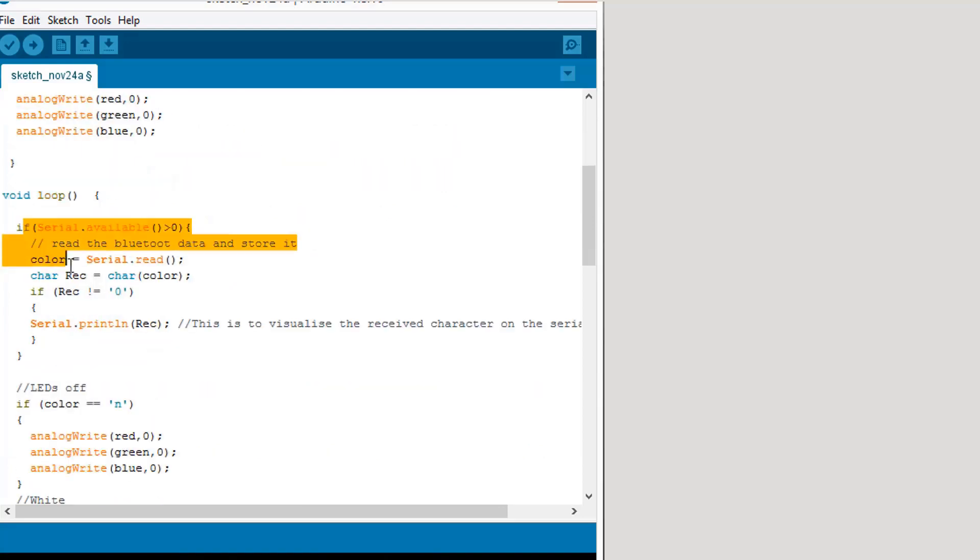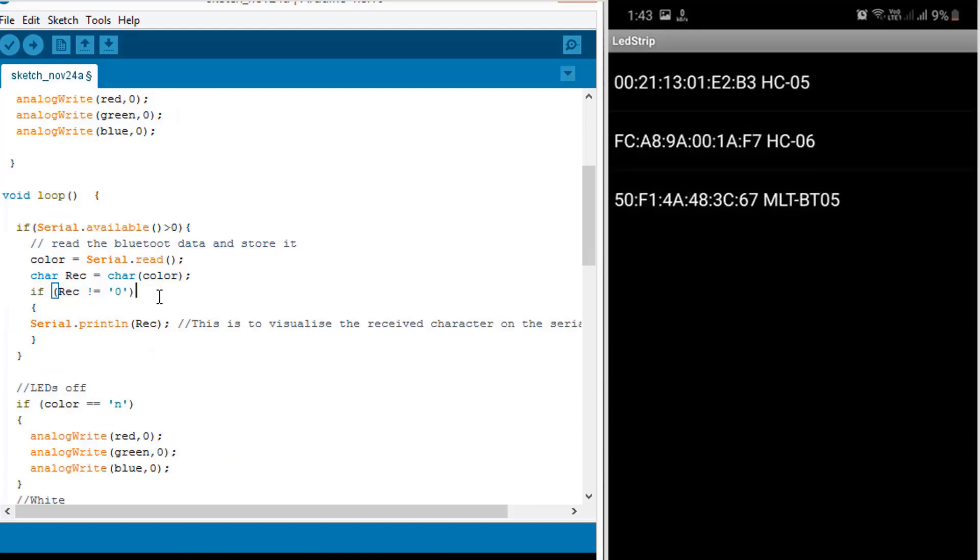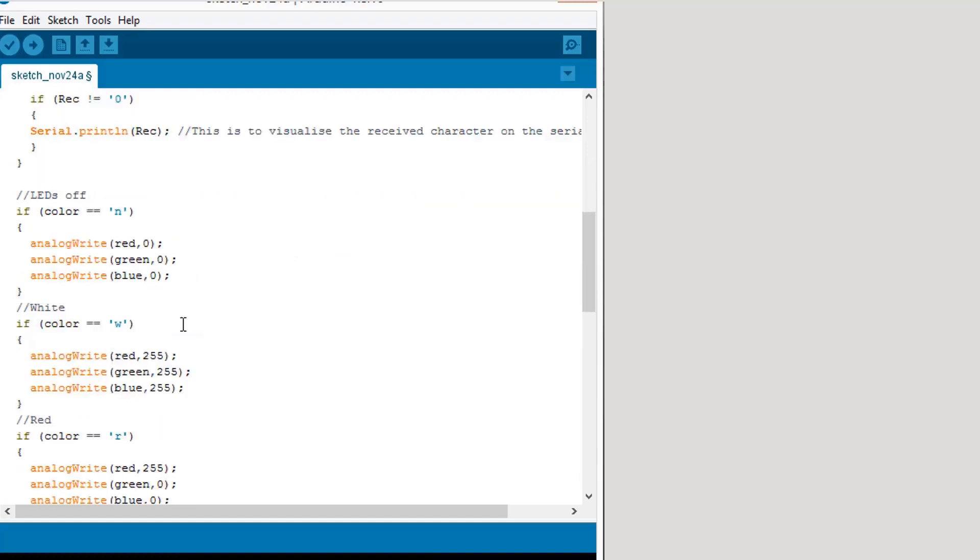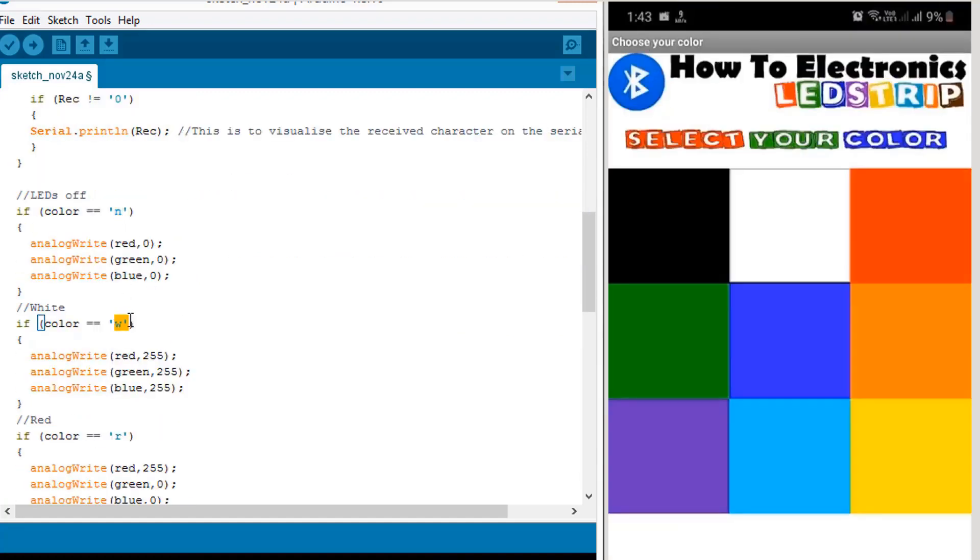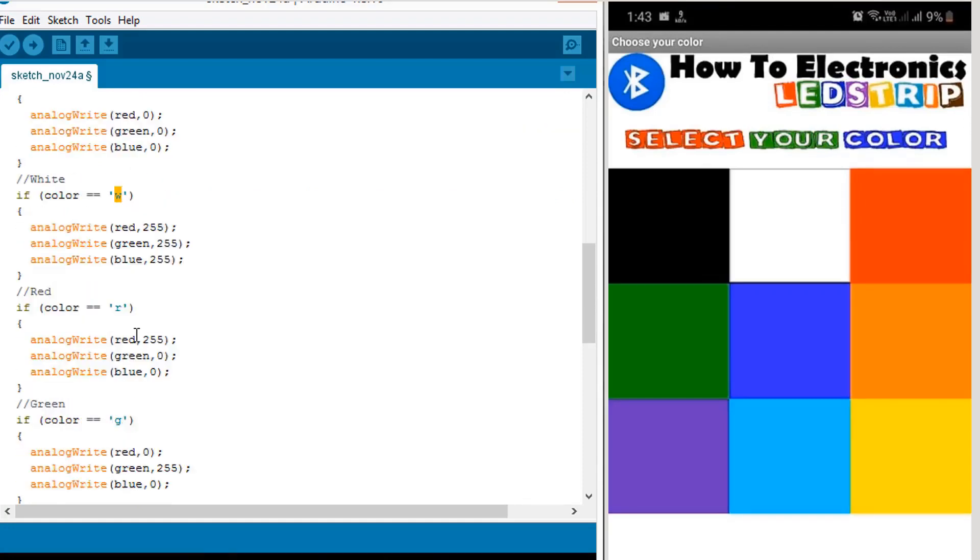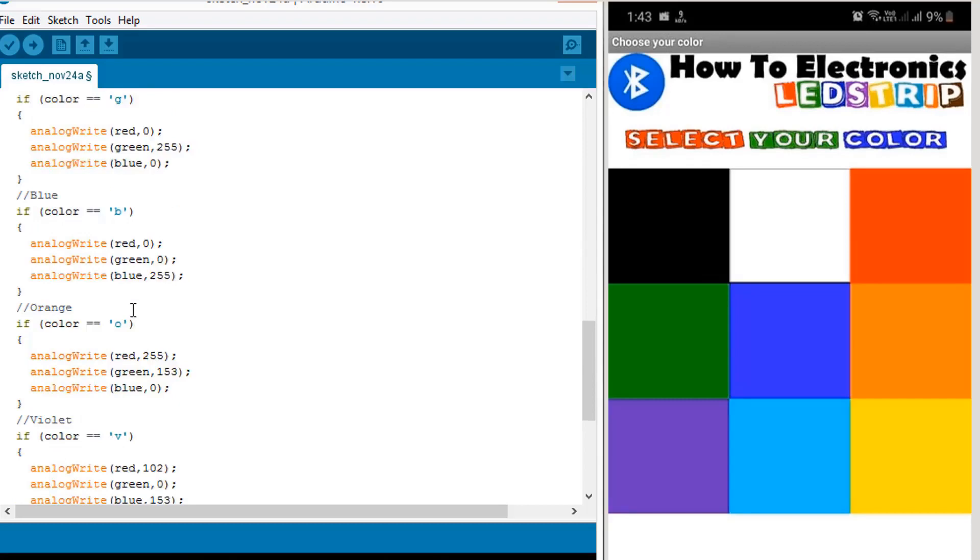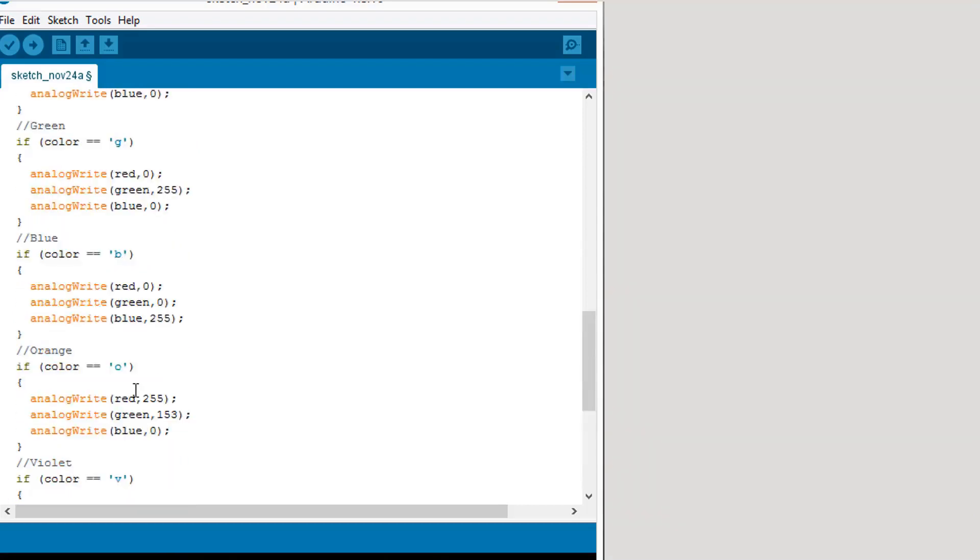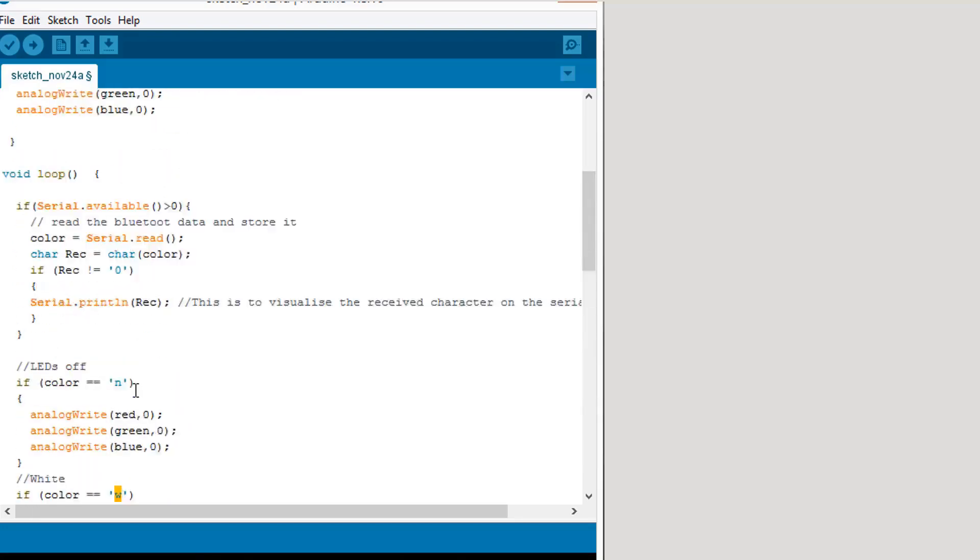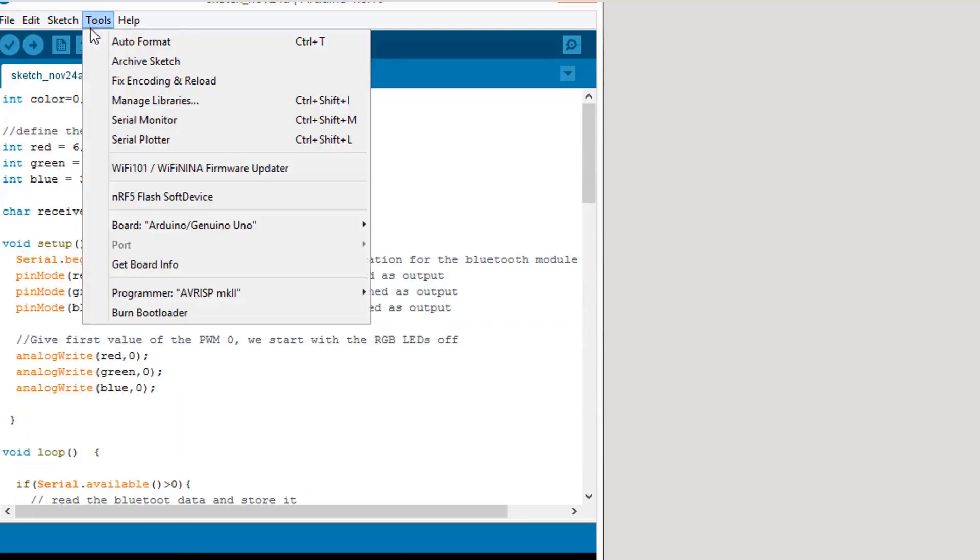Now we will send some character to control different colors. For controlling white color, we are sending the blue and red, green, blue range is given something different. For controlling green, the code is something like this. For blue, orange, and violet, all the different colors are having different frequency ranges. Now just connect and upload this code to your Arduino board.